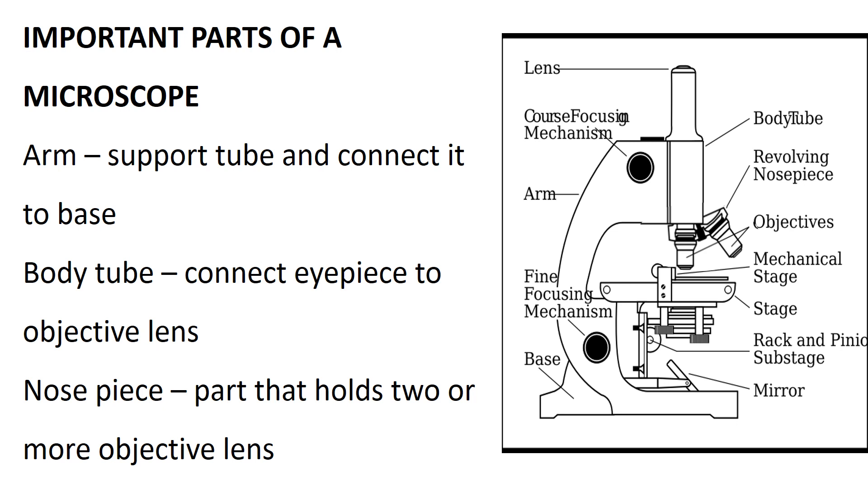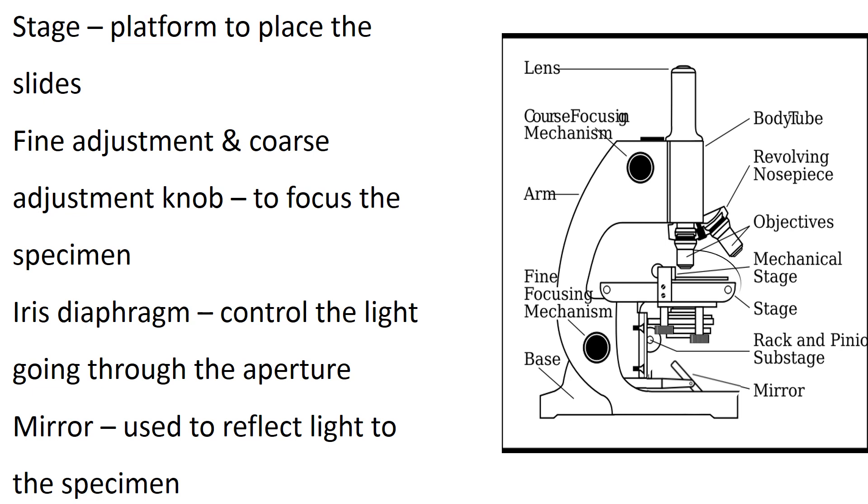Important parts of microscope: Arm supports the tube and connects it to the base. Body tube connects eyepiece to objective lens. Nosepiece is the part that holds two or more objective lenses. Stage is the platform to place the slides. Fine adjustment and coarse adjustment knobs are used to focus the specimen.